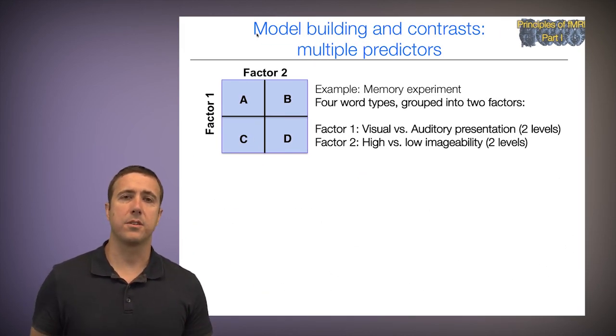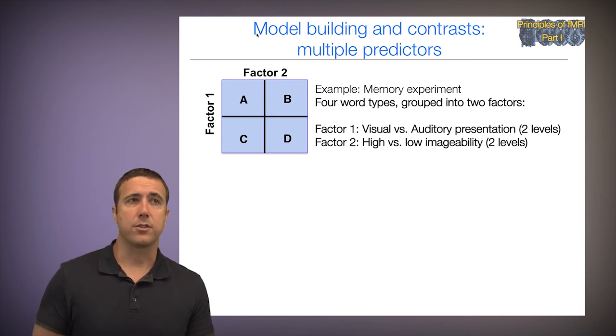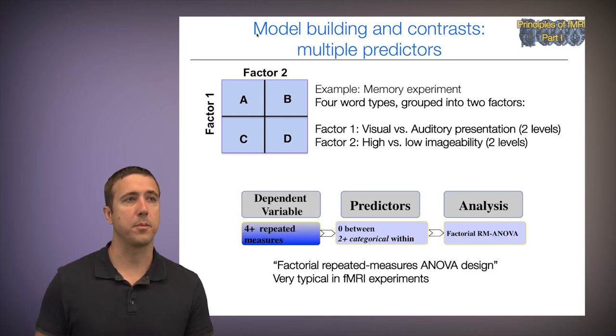So let's generalize this now to the case where we have multiple predictors. This will be a useful example that we'll take forward with us in future lectures as well. Here I've got a design with four conditions. Let's say this is a memory experiment. I've got four word types: A, B, C, and D, and they're grouped into two factors. Factor 1 we'll call modality, or visual versus auditory presentation. So there are two levels of that factor. Factor 2 is high versus low imageability. It turns out words that are imageable are easier to remember. So there's two levels of imageability in our example. This is an example of a factorial repeated measures ANOVA design, to go back to the earlier lecture. That's because there are four or more repeated measures. We have each of the four trial types sampled within person, with multiple instances per person. In this case, we don't have any between-subject predictors yet. So I've just got a straight-up factorial repeated measures ANOVA design. Very typical for fMRI.